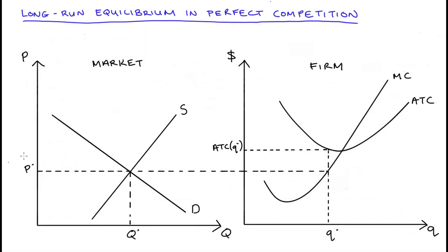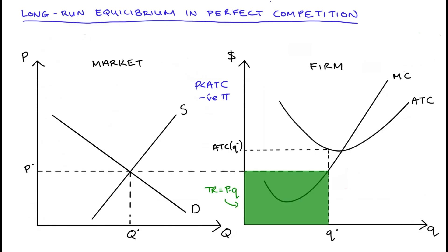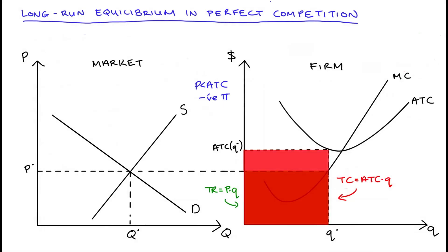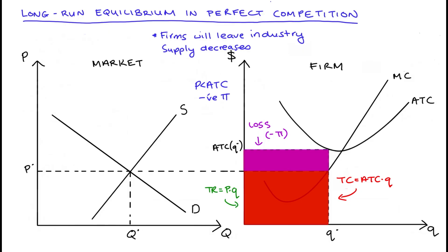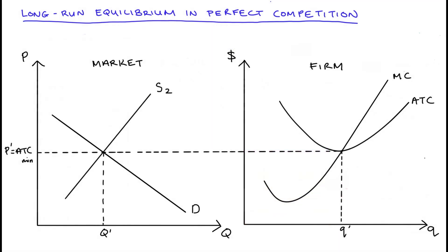Let's think about the opposite case — if price is less than average total cost. As we said, firms are going to be making a loss, so negative profit. Our total revenue (the green box, price times quantity) is now smaller than total costs (average total cost times quantity). Revenue doesn't cover costs and the firm is making a loss — colored in purple. This loss means firms will start to leave the industry, reducing market supply. This reduction shifts the supply curve to the left, which has the effect of increasing the price. The supply curve will shift until price is exactly equal to average total cost, so total revenue is exactly equal to total cost and profit is zero.